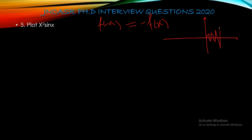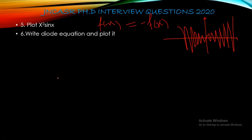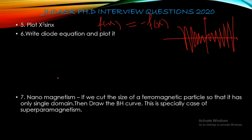On the right hand side of the graph, the amplitude will increase. The left hand side will be the mirror anti-symmetric reflection. So this is your x² sin(x) plot. Then the next question was to write the diode equation and plot it.